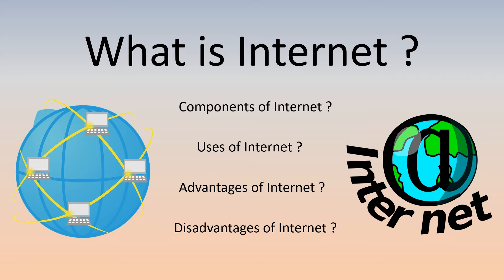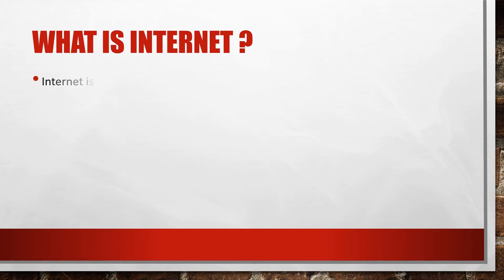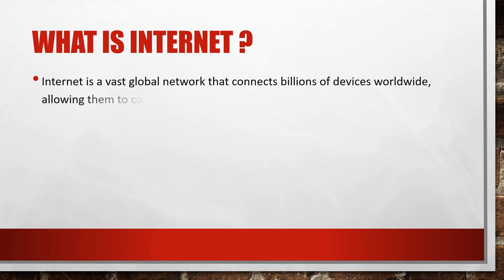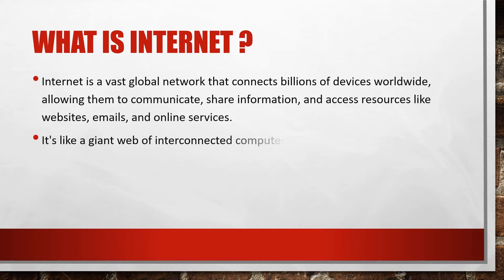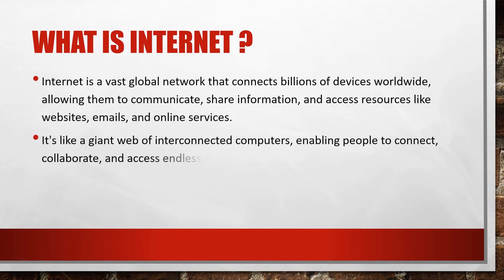Hello and welcome to the channel. Today we will discuss the internet — what it is, its components, uses, advantages, and disadvantages. Internet is a vast global network that connects billions of devices worldwide, allowing them to communicate, share information, and access resources like websites, emails, and online services. It's like a giant web of interconnected computers enabling people to connect, collaborate, and access endless amounts of information instantaneously.